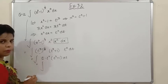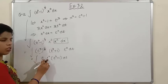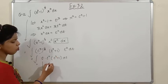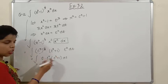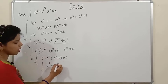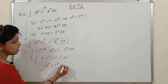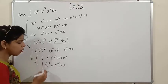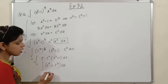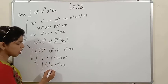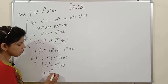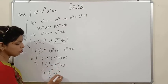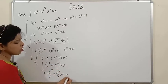Simplifying: t · t² = t³, so we get ∫(t³ + 1) · t³ dt = ∫(t⁶ + t³) dt. Using the x^n formula: the integral of t⁶ is t⁷/7, and the integral of t³ is t⁴/4. So the result is t⁷/7 + t⁴/4 + c.